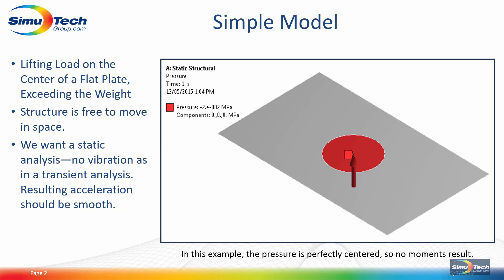Let's take a look at a simplified example — not a rocket, but a flat plate with a circular imprint in the exact center of this rectangle. We have a net force applied with a pressure, just on the circular imprint, and the net force exceeds the weight of this plate. Suppose this structure is free to move in space. We would like to run a static analysis, not a transient. We don't want any vibration — just the steady state situation, even though the structure would be accelerating upward.